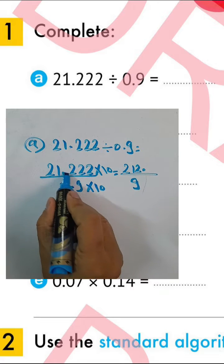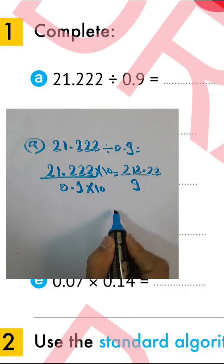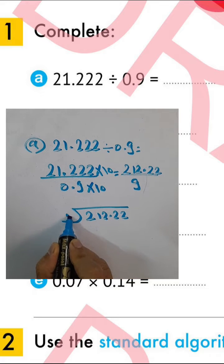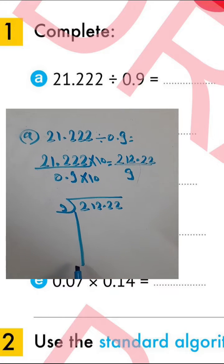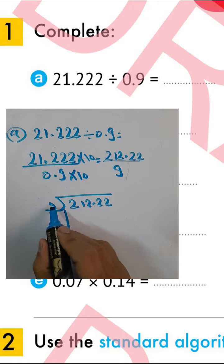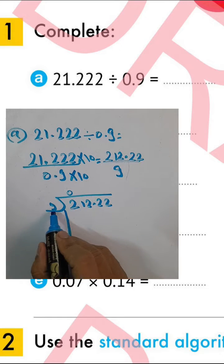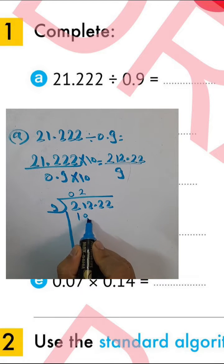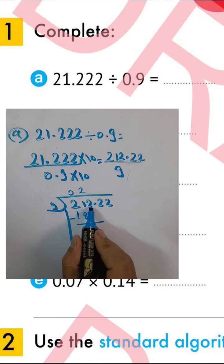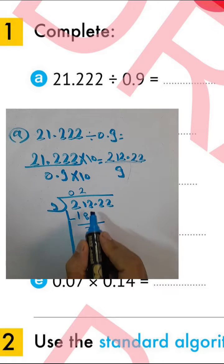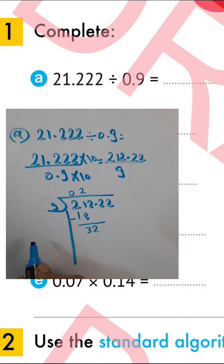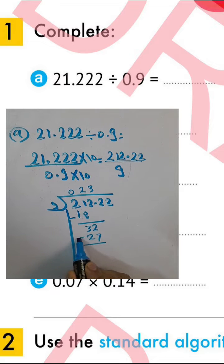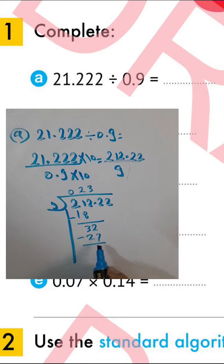Move the point to get 212.2 and 2 divided by 9. We can do that with 0, and 21 divided by 9 equals 2. Two times 9 equals 18. 21 minus 18 equals 3, then drop 2 here. 32 divided by 9 equals 3. Three times 9 equals 27, and 32 minus 27 equals 5.